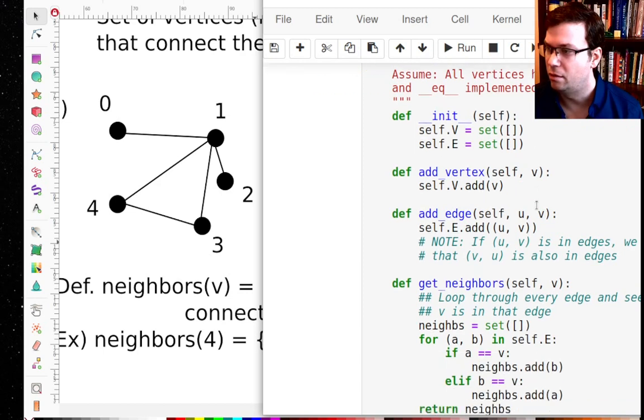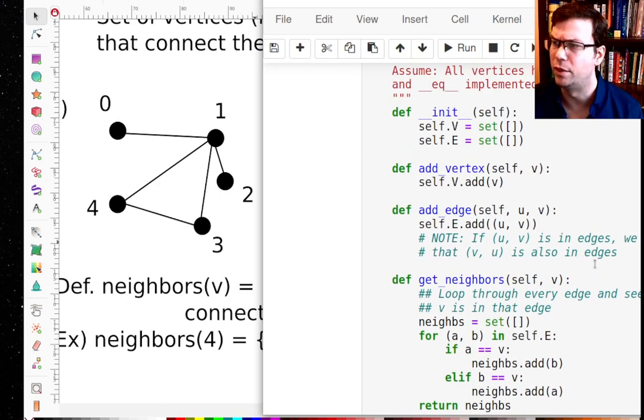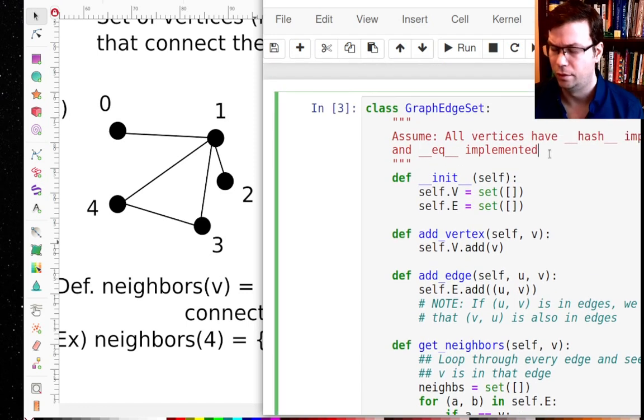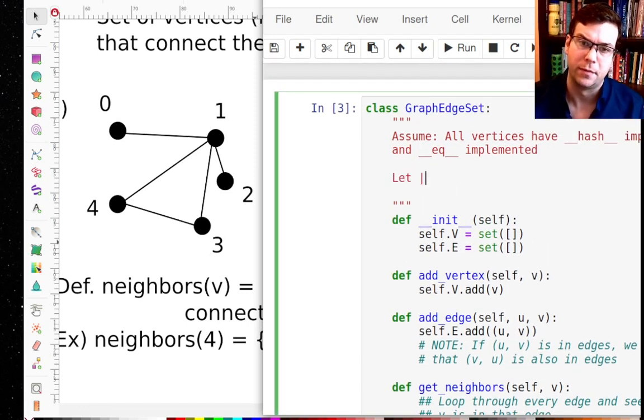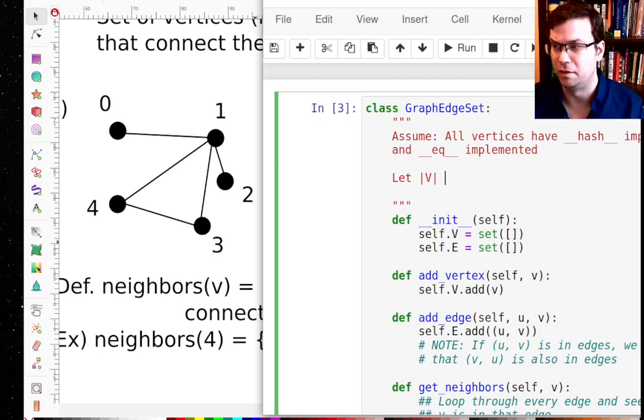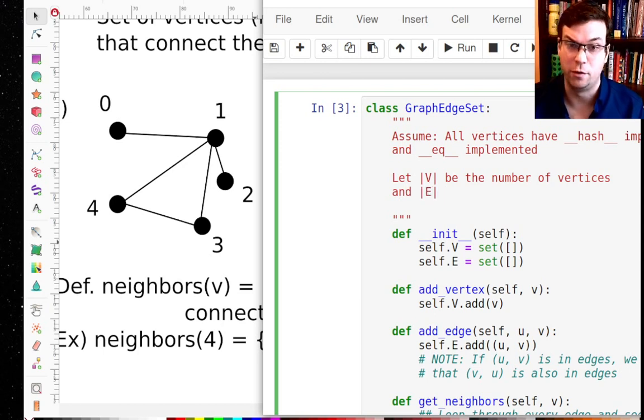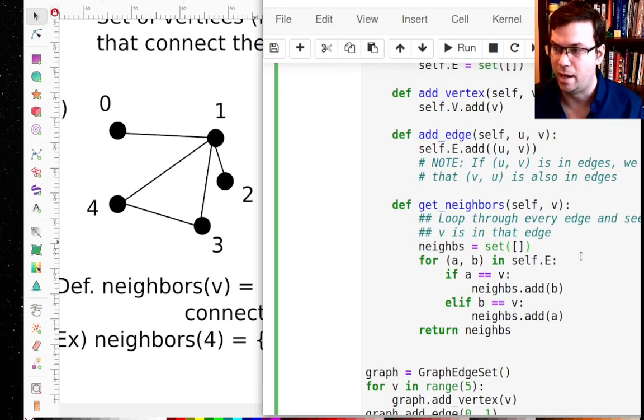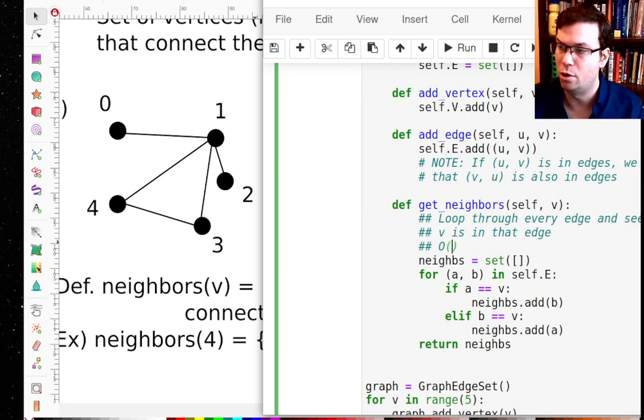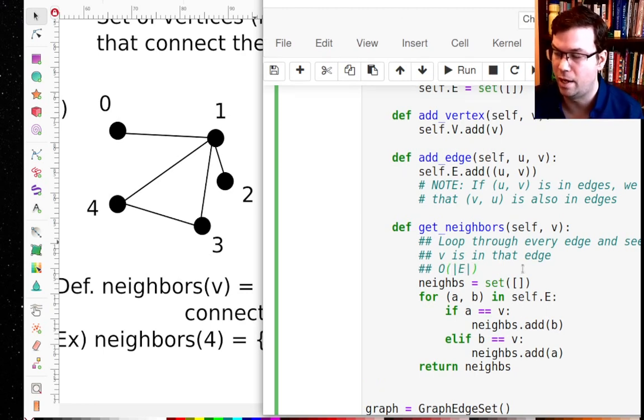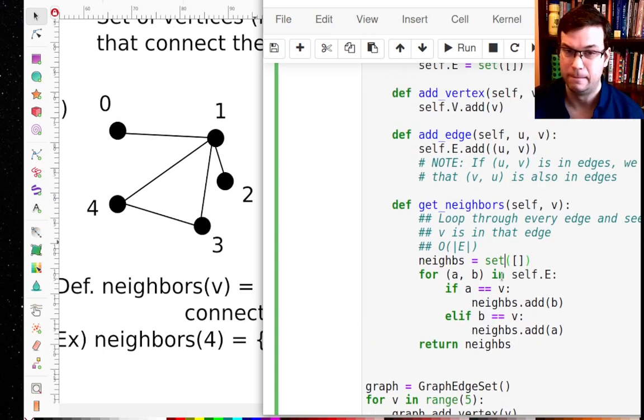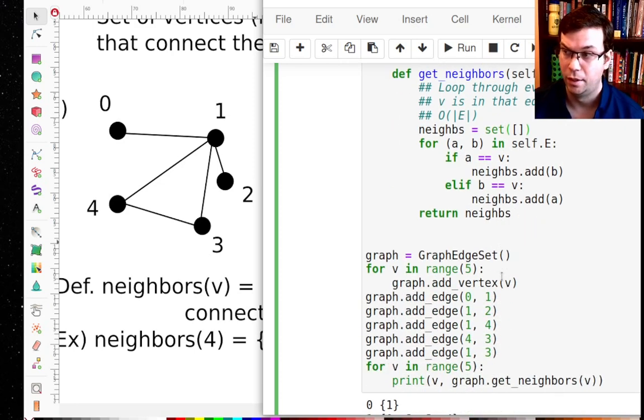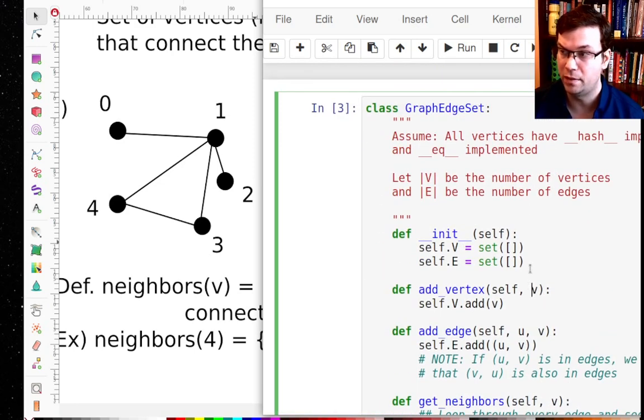But if we think here in terms of the number of elements that are in here, let me say that this is the cardinality of V, be the number of vertices. And this is the cardinality of E, be the number of edges. Well, the time complexity of this algorithm here is big O of E, right? Because we have to loop through every edge. So that is actually a bit of a drawback of this data structure because we can do a lot better.